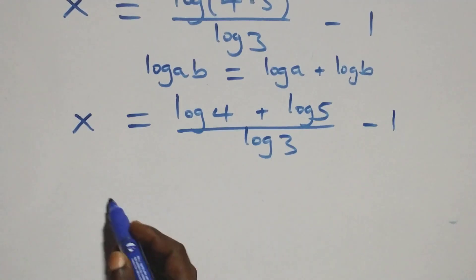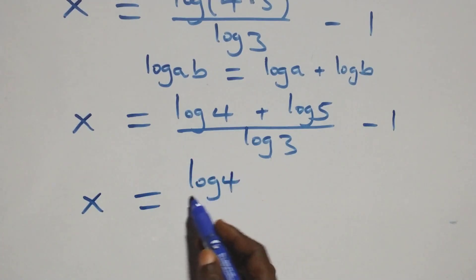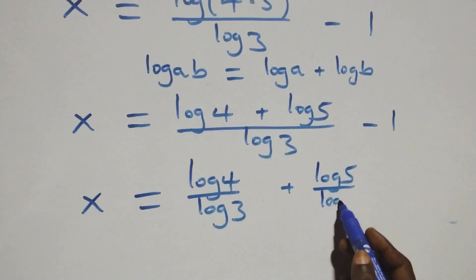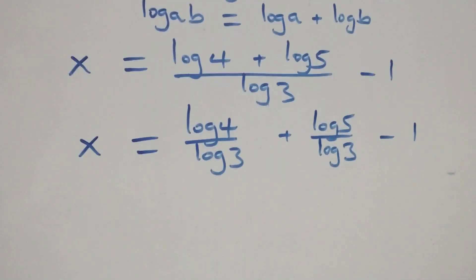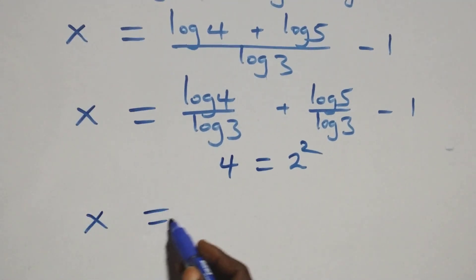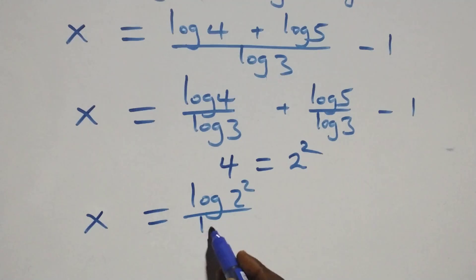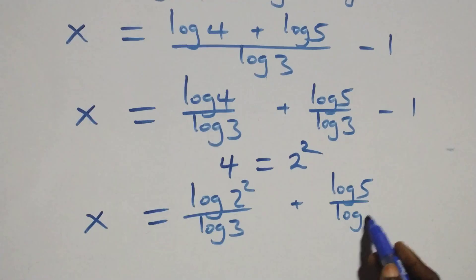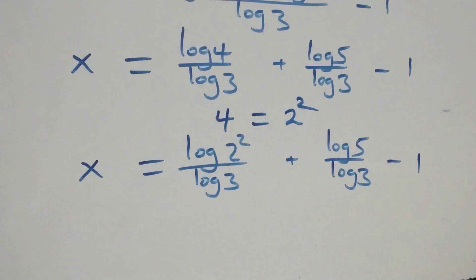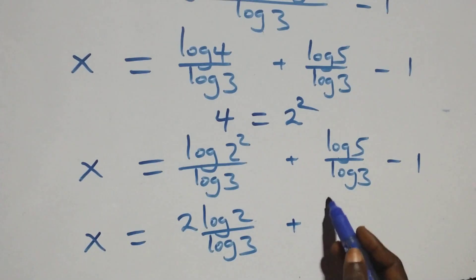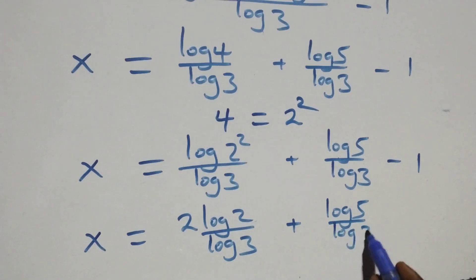We separate this into two fractions and we have x equals log 4 over log 3 plus log 5 over log 3 minus 1. Then, 4 can be written as 2 times 2, that is 2 squared. So we have x equals log(2 squared) over log 3 plus log 5 over log 3 minus 1. Applying the power rule, 2 comes down: x equals 2 log 2 over log 3 plus log 5 over log 3 minus 1.